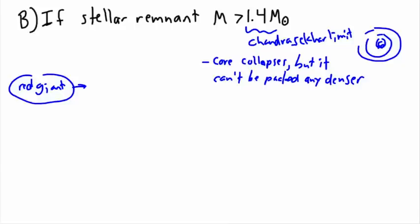But in this case it has enough mass to where this core collapse is so violent, and because it can't be packed any denser, the material bounces out. This is actually what happens in a supernova explosion. The material bounces out, so it's not like the star actually explodes in that sense.